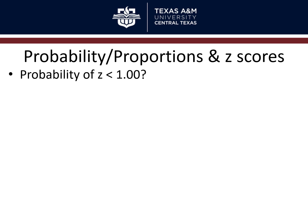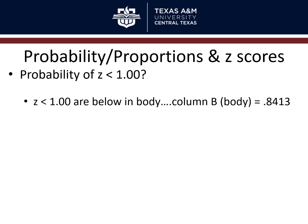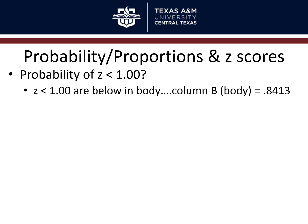What about the probability of z less than one? For a positive z, below is the body — so for z less than 1, we look in column B, which gives 0.8413. Note that 1 minus 0.1587 equals 0.8413, and 0.1587 plus 0.8413 equals 1 — which makes sense, because the probability of above or below z=1 is everything. The probability of getting above z=1 was 0.1587, and the probability of getting below z=1 is 0.8413.